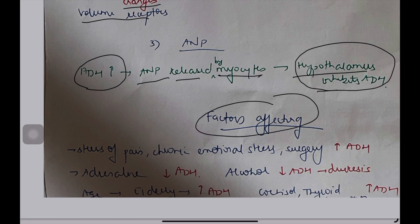What are the factors affecting? Stress of pain, chronic emotional stress, surgery, all these decrease ADH. Adrenaline, decrease ADH. Alcohol, decrease ADH due to diuresis. You know what is diuresis, right? Age, elderly, all increase ADH. Cortisol, thyroid, all increase ADH. Now let's see the applied physiology.